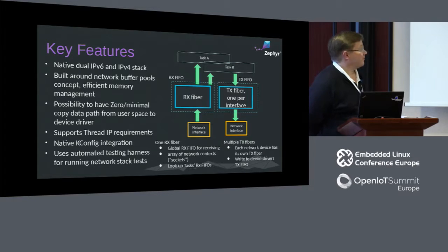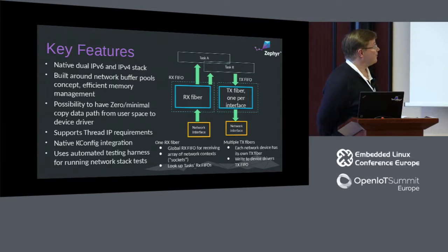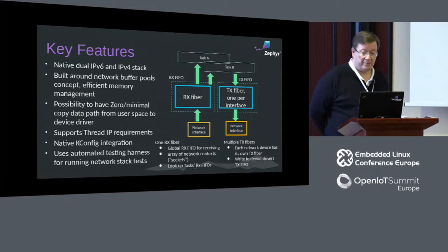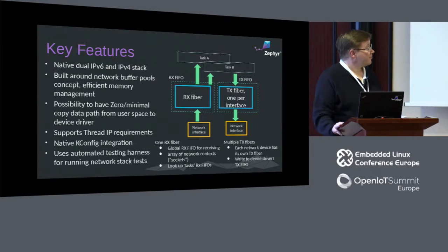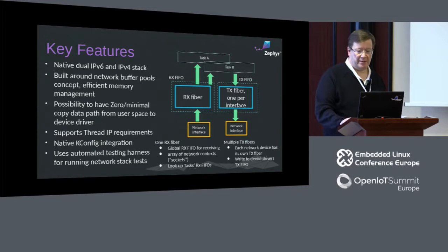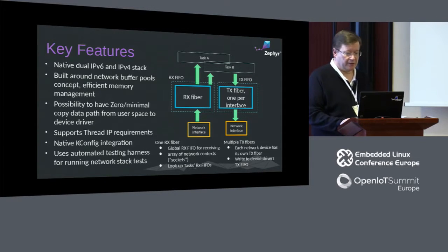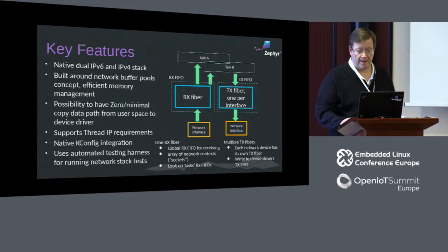On the right-hand side there is a high-level picture of the network data path. We have one RX fiber or thread — these are called fibers in Zephyr — that receives data from the device driver. The device driver is abstracted as a network interface. The RX fiber runs the protocol dispatcher logic, so depending on the data like UDP or TCP, the dispatcher checks if there are any applications listening on the corresponding destination port, then passes the data to the correct application. Any control traffic like ICMP messages are handled in the core stack, but it is possible to hook into this system and get data directly to the application if really needed.